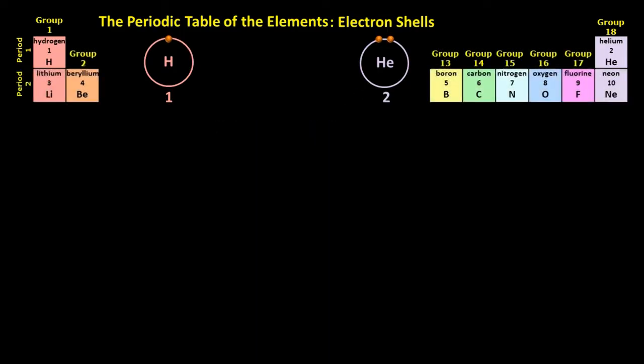Let's now move on to period two. Lithium atoms have three electrons. Two of them fit into the first shell, but a second shell is needed for the third electron. Lithium's electron configuration is two, one.